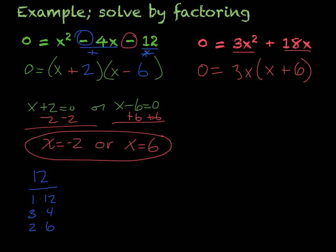So I set each of these equal to 0. 3x = 0, and x + 6 = 0. And then I just solve.